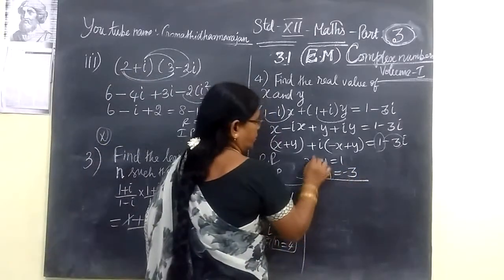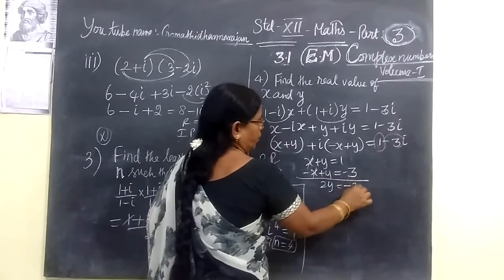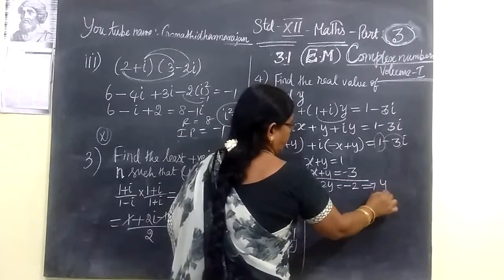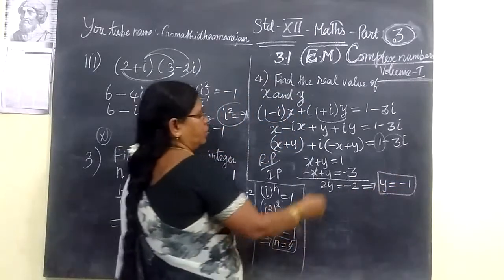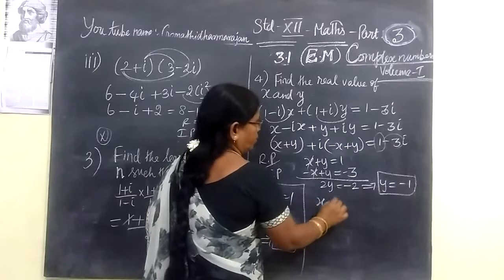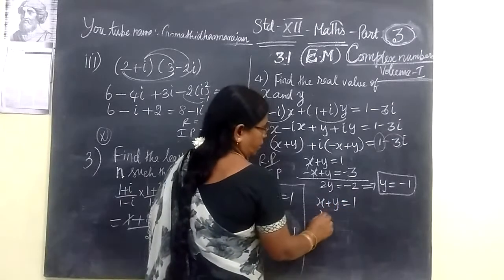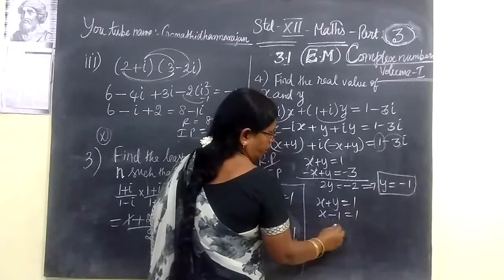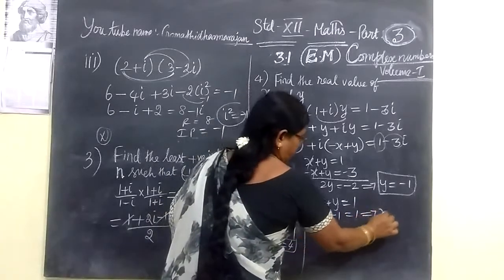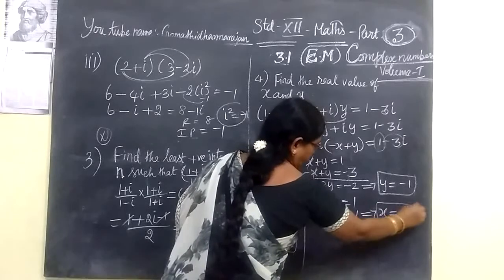So if we cancel, you get 2y equal to minus 2. So which implies y equal to minus 1. You substitute x. So x + y equal to 1. x plus y, you're writing minus 1. Minus 1 into 1, you can find x equal to 2.